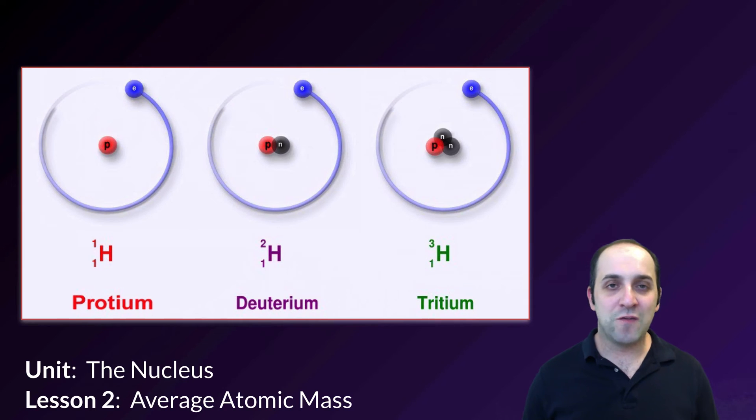In these three isotopes of hydrogen, we see that they have zero, one, and two neutrons as we go from left to right on the slide. Let's see how this factors into determining an element's average atomic mass.